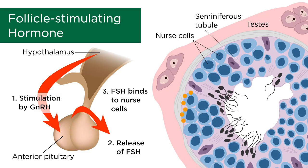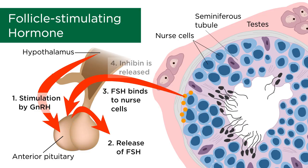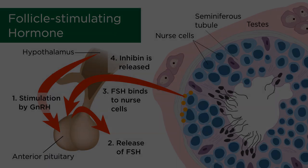Hormonal factors also play a role in the release of inhibin, which feeds back on the anterior pituitary to regulate the release of FSH. This is an example of negative feedback. Maintaining proper levels of gonadotropins is crucial in order to maintain normal levels of sperm as well as testosterone within the body, to prevent any undesired negative effects.